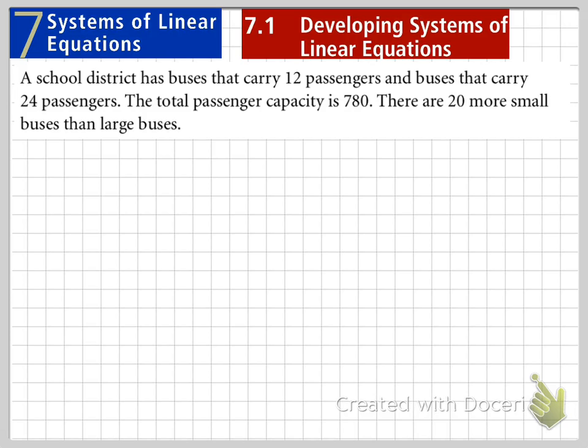Let's look at a problem. The school district has buses that carry 12 passengers and buses that carry 24 passengers. The total passenger capacity is 780. There are 20 more small buses than there are large buses.